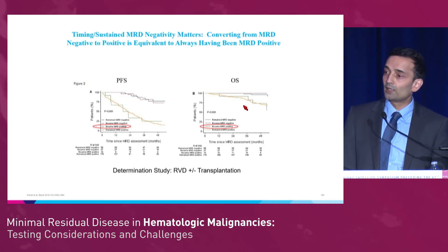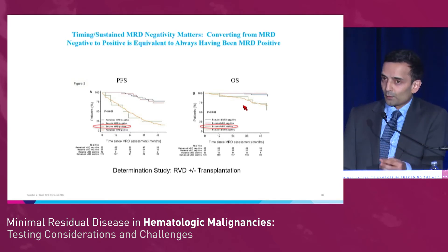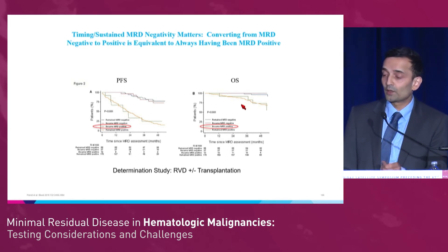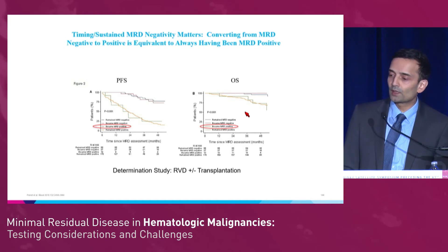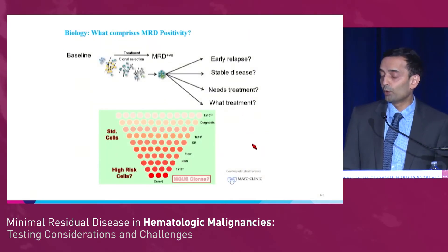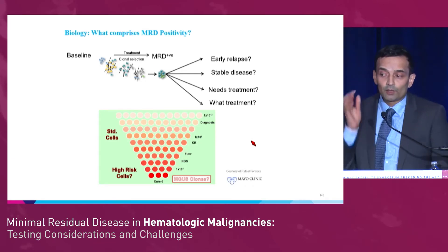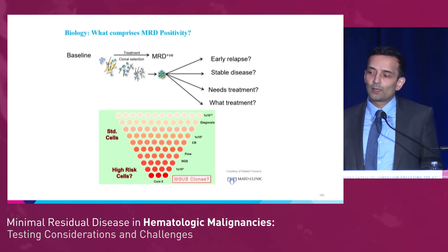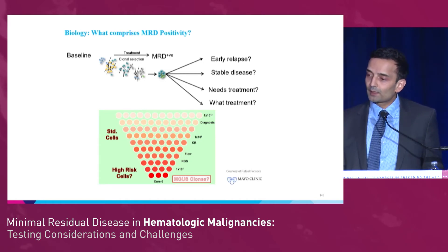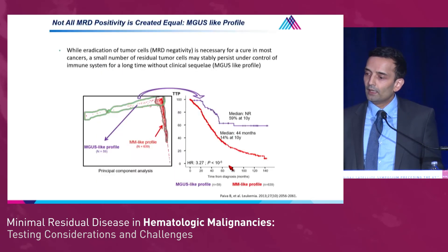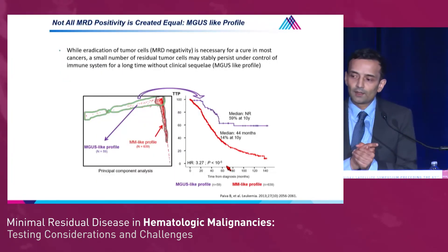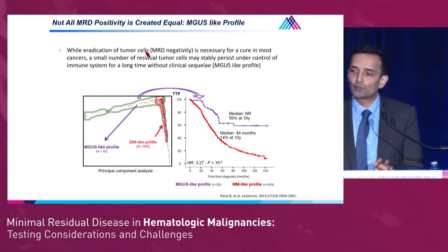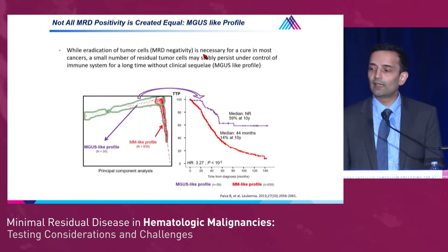A single time point of MRD may not be enough, and even for regulatory purposes where clinical trials are showing earlier signs of deeper remissions, the sustaining of MRD will probably be very important. Something I think is exceedingly important in myeloma is understanding the biology. We talk about MRD negativity and positivity, but what exactly comprises those MRD-positive cells? Are these early relapses? Is this residual stable disease? Does this need treatment — and if so, what treatment?